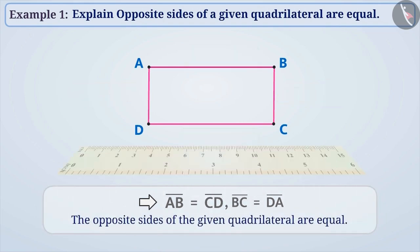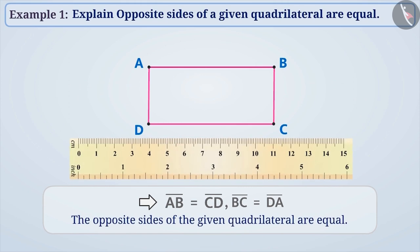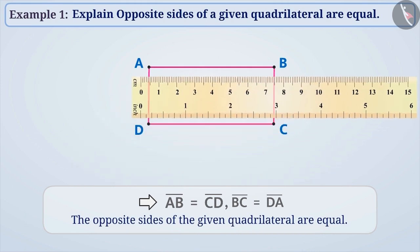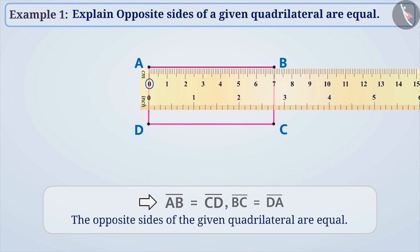We can also measure the length with the help of a ruler. But we will have to take some precautions. For instance, we will place the ruler along line AB in such a way that the mark 0 is exactly on point A.